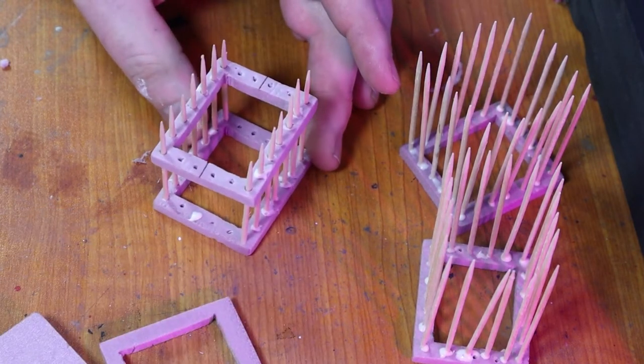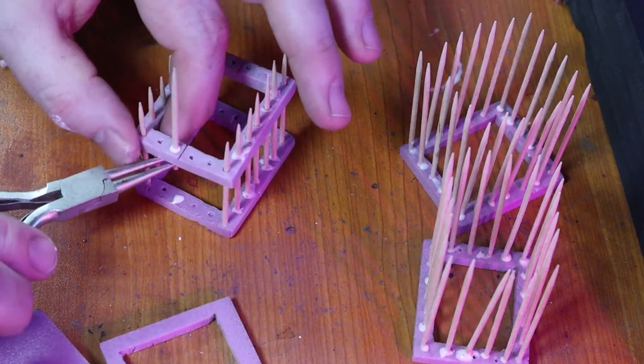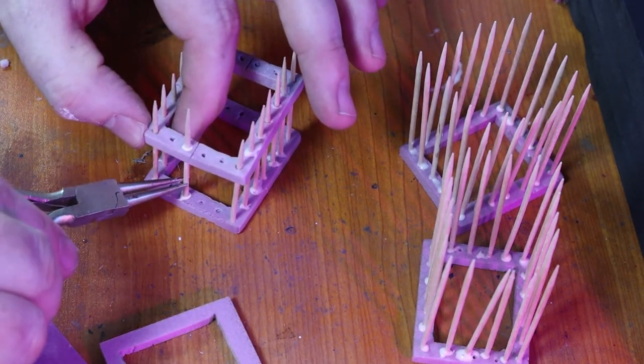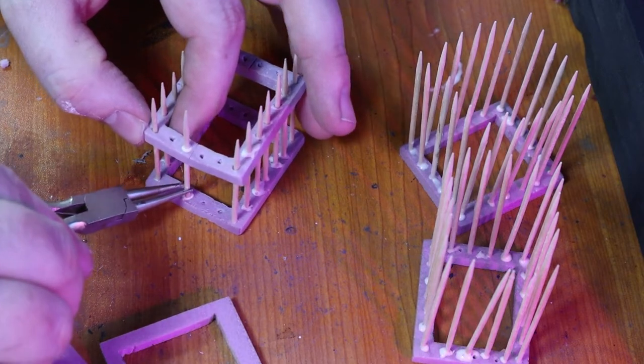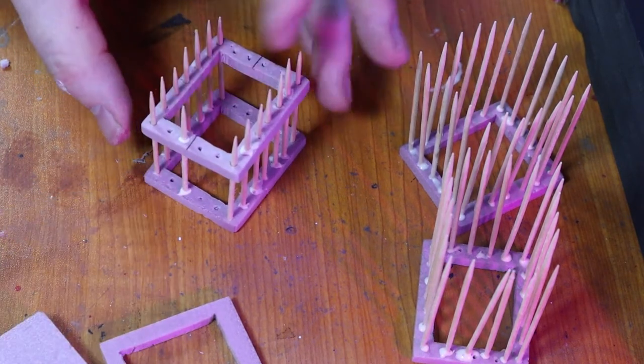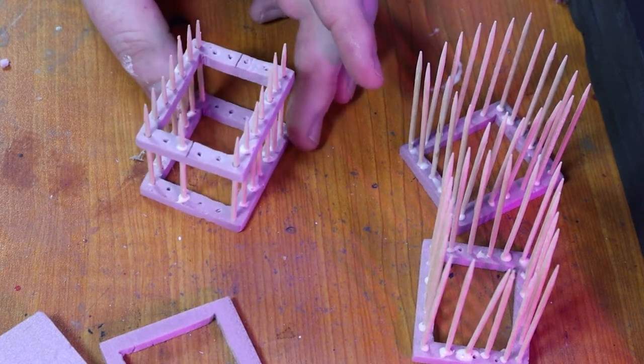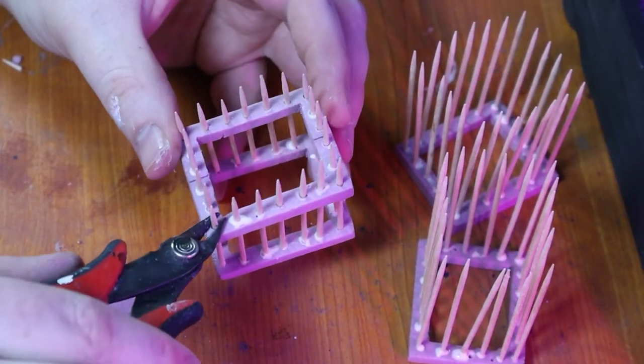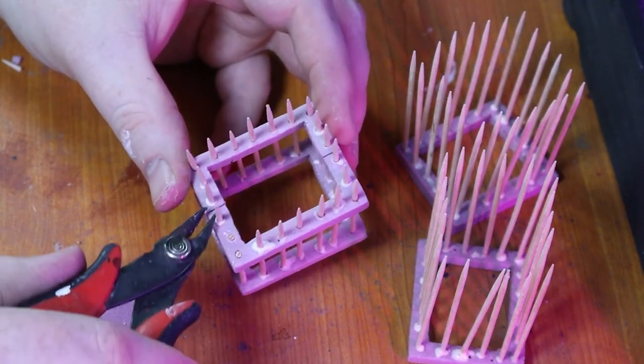Hopefully that makes sense—if it doesn't, just watch what I'm doing. I'm using these jewelry pliers to pull the toothpick down through and get the rectangle down to the height that I want. Now we're starting to look like a sort of spiky jail cell.